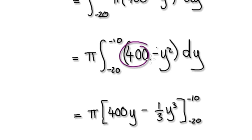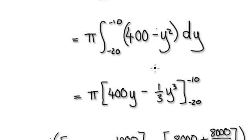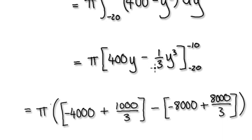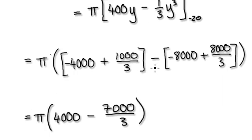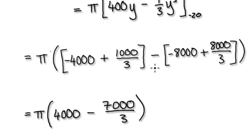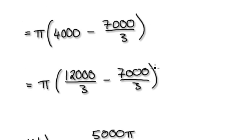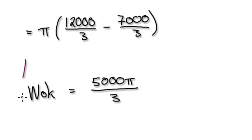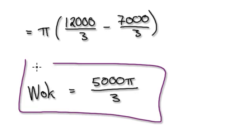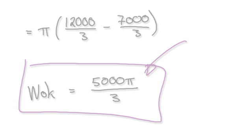Don't forget, 400 is just a constant. When you integrate it, it will be 400y. And the volume here should be this. The volume of the wok should be this.